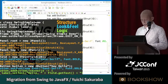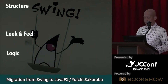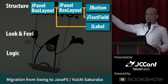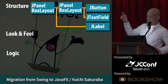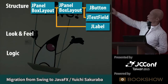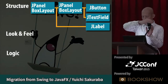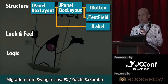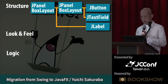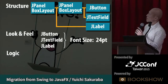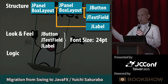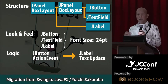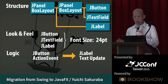The structure is a tree. The top is a JPanel with BoxLayout, and it has two children: another JPanel and a JLabel. The second JPanel with BoxLayout has two children: a JButton and a JTextField. The look and feel is only font size 24 points. The logic is: click JButton, get an ActionEvent, then update the text.